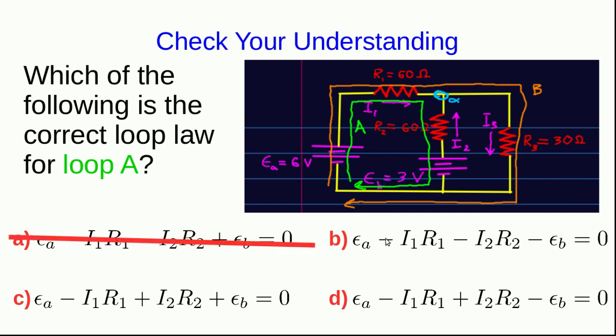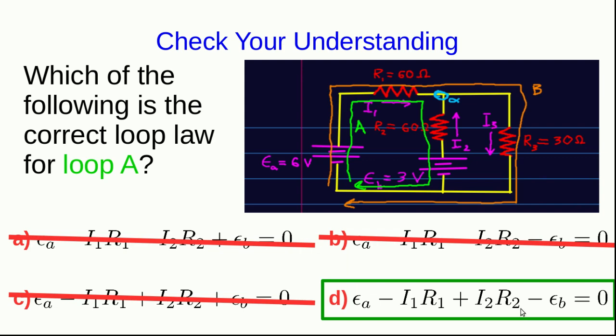And so these two that show a potential drop through there must be wrong. Then we reach this battery, and we're starting at the positive terminal and going to the negative terminal, so we must be walking downhill. We're walking along a ski lift from the high end to the low end. And so this one that shows a rise through epsilon b is also wrong, and so we're left with d as the correct one.